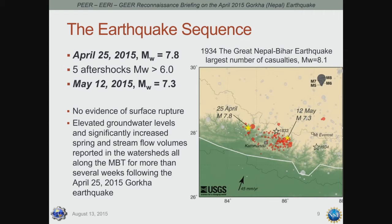The April 25, 2015 earthquake resulted in a moment magnitude 7.8 event — the largest in the sequence. Hundreds of aftershocks were recorded, with approximately five aftershocks of moment magnitude greater than 6.0. The largest aftershock occurred on May 12, 2015, with a magnitude of 7.3. Team A was deployed during that event, and we were grateful that everybody was safe — shaken up, but safe.